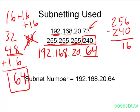To summarize: if you have an octet which is not 255 or 0, subtract it from 256. That gives you your multiple, and you keep adding it to itself until you get as close as you can to the corresponding IP address octet value without exceeding it. That becomes your subnet number.